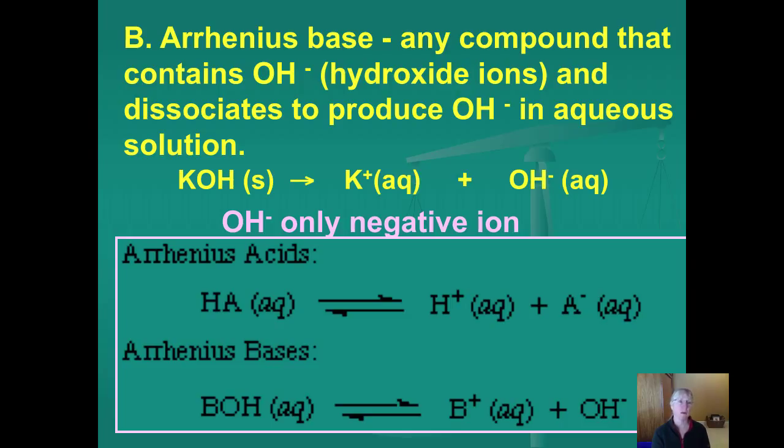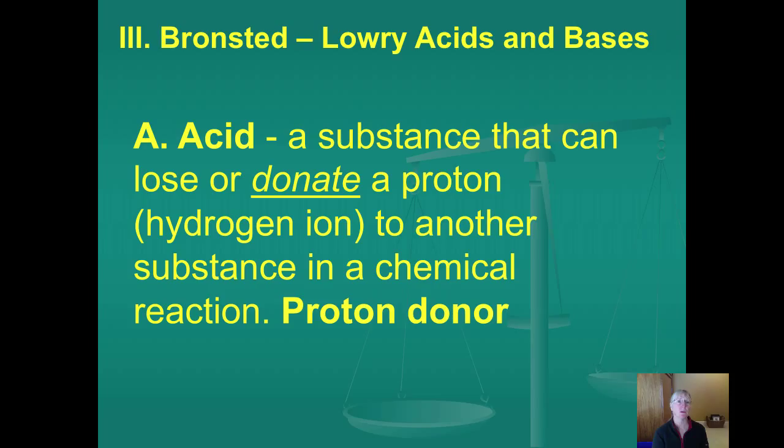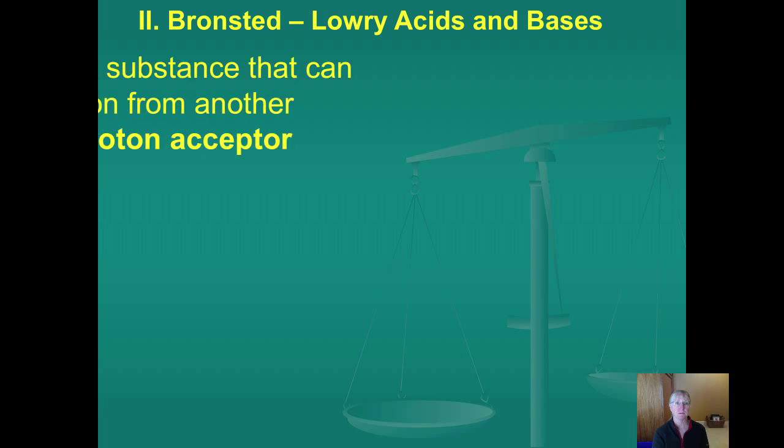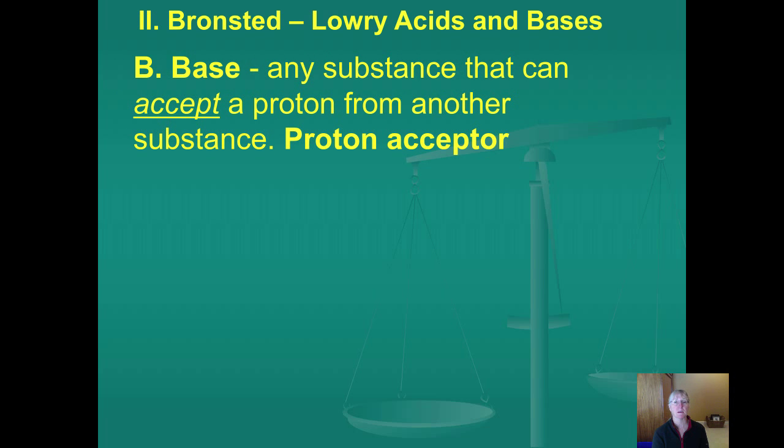So here are some general definitions of what makes an Arrhenius acid and an Arrhenius base. But what we're going to do is leave that definition behind, because historically it's interesting. Let's go to use the more modern model of what acids and bases are. And the definition, according to the Bronsted-Lowry, is that an acid is any substance that can donate a proton. Remember, a hydrogen ion. So a lot of times they use the word proton and hydrogen ion interchangeably, because they're the same thing. So they're a proton donor. And a base will be any substance that can accept a proton from another substance. It's a proton acceptor.